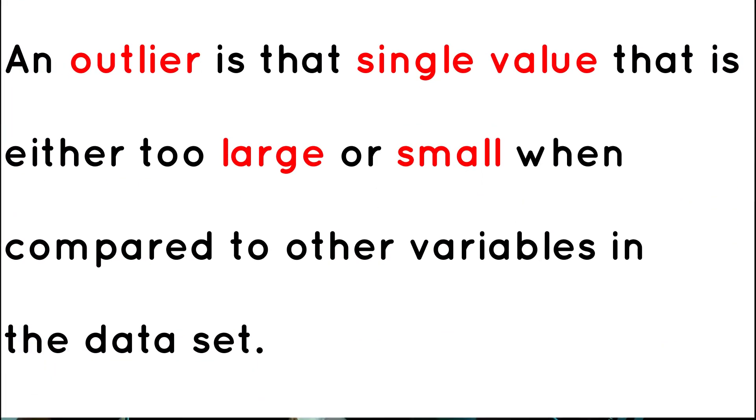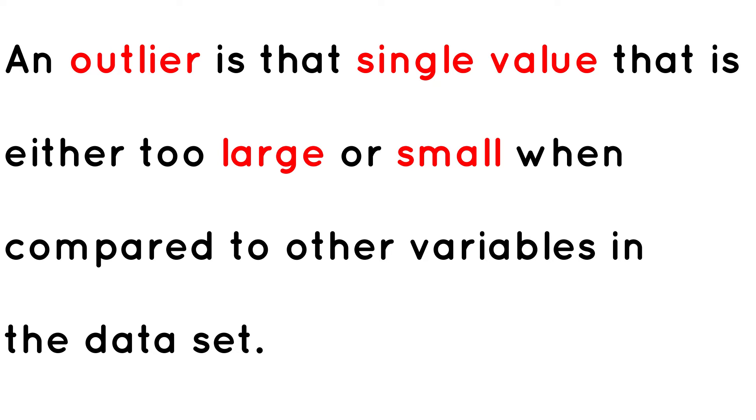The second property of the mean is that it is very sensitive to outliers. What is an outlier? An outlier is that single value in statistics that is extremely large or extremely small when compared to other variables in the dataset. Let's look at how the mean value is affected by outliers, going back to the previous example — the ages of students: 7, 10, 12, 12, 8, and 11.